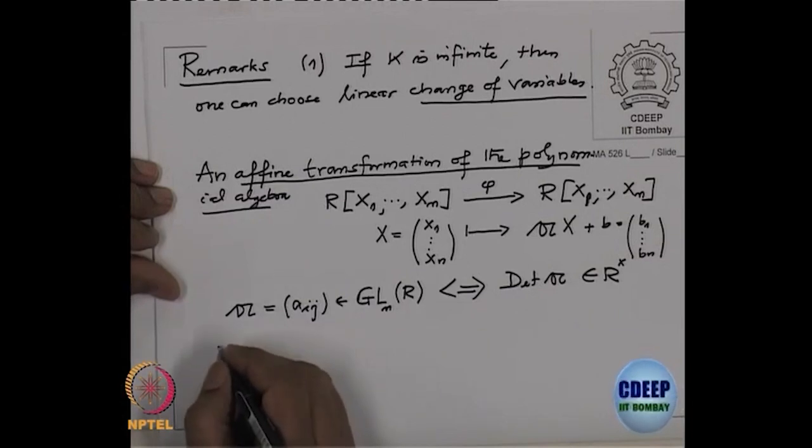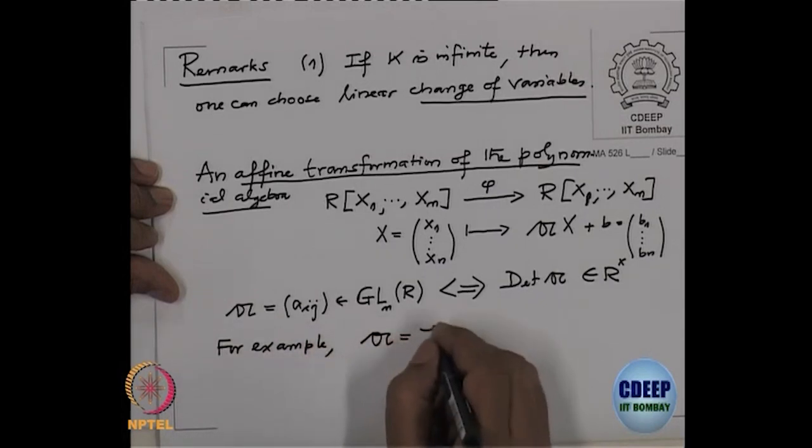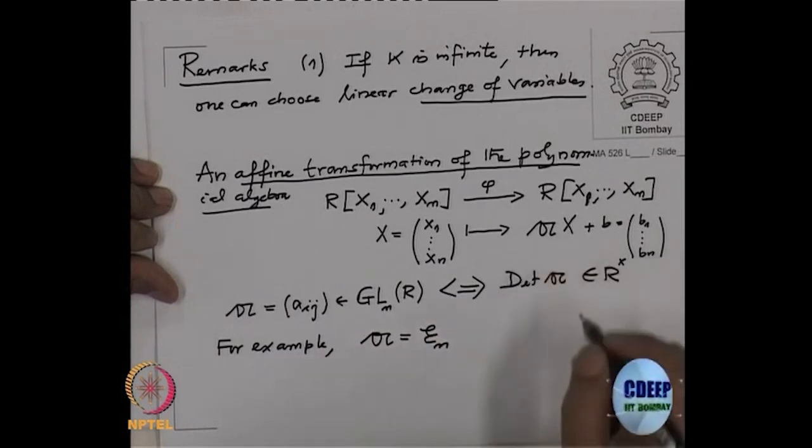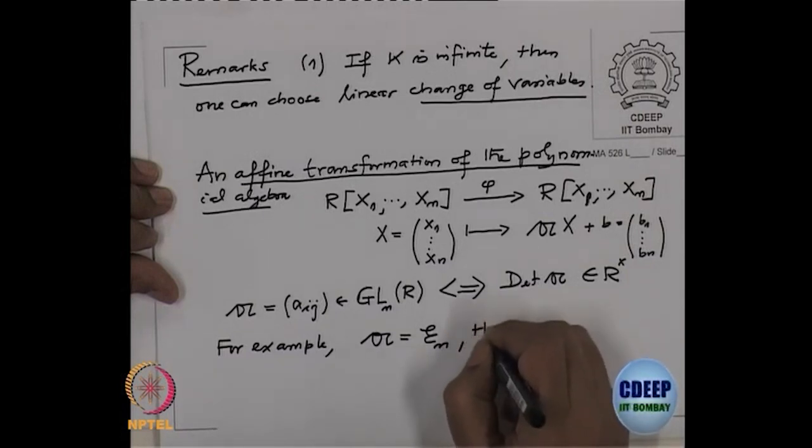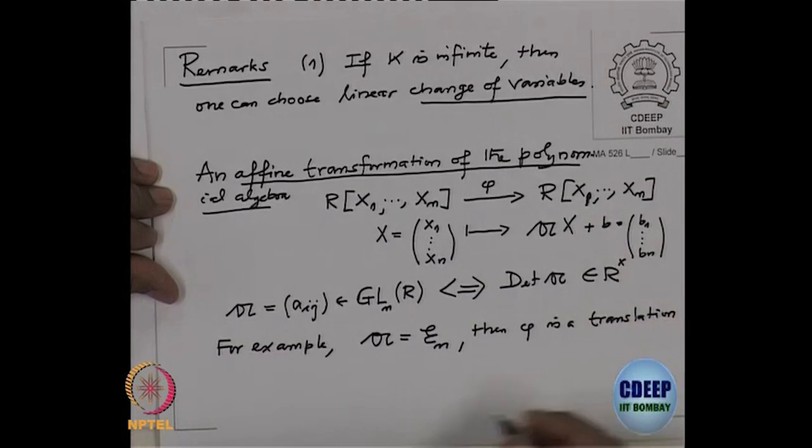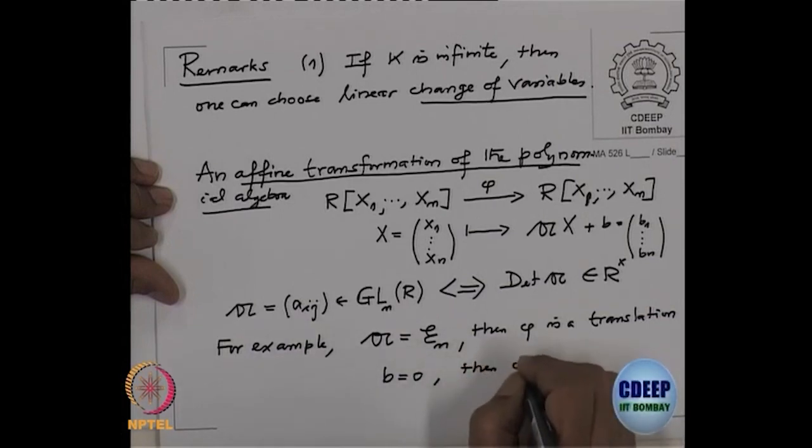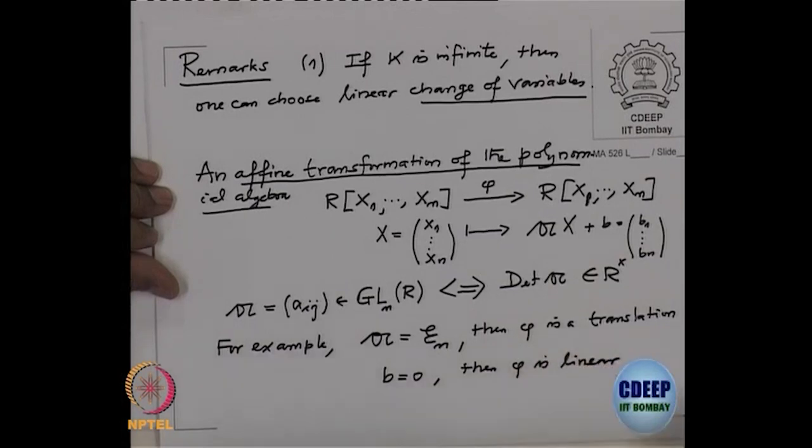So such automorphisms are called affine transformations of the polynomial algebra. For example, if you take matrix A to be the identity matrix Iₙ, then φ is a translation. On the other hand, if B is 0, then it is linear. In our case B is 0, but it's not linear. So these are not the automorphisms we have given in the proof of the lemma.